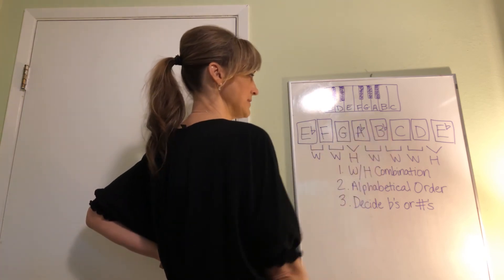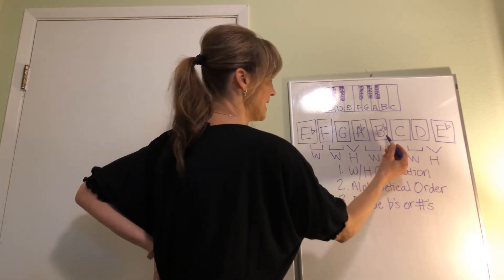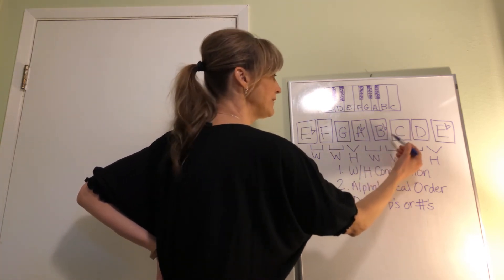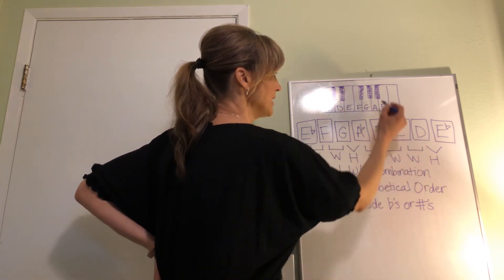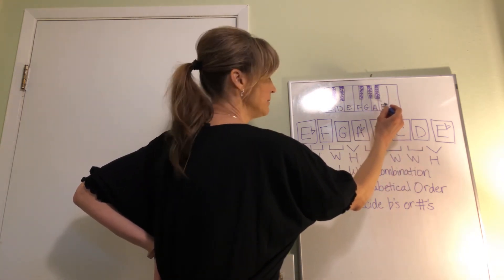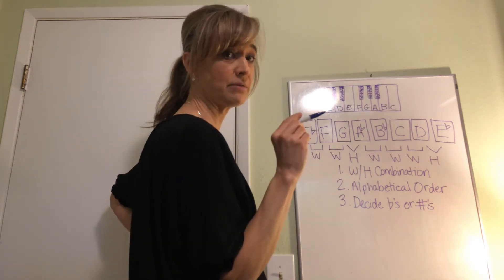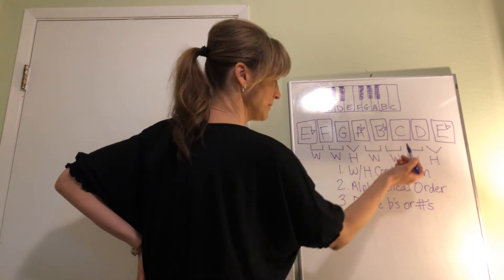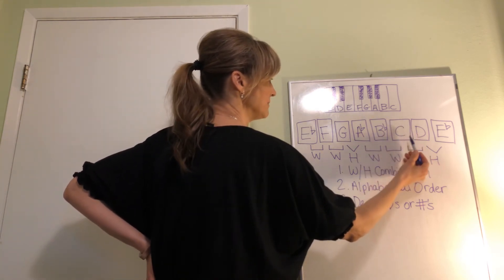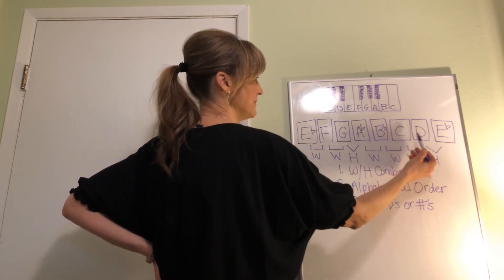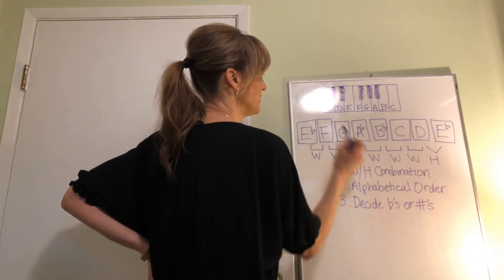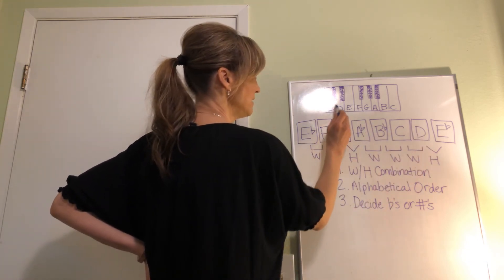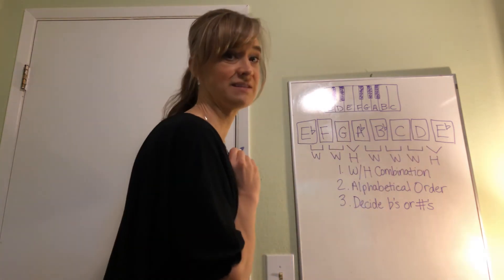B-flat is locked. Everything is locked up to this point. B-flat to C - we want to see if that's a whole step. Here's B-flat to B, a half step. B to C, half step. Half plus half is a whole. So B-flat to C is a whole step. C is locked. Now let's see if we need to change D. C to D - is that a whole step? Let's go back over here. C to D, black key in between. Yes, it is.